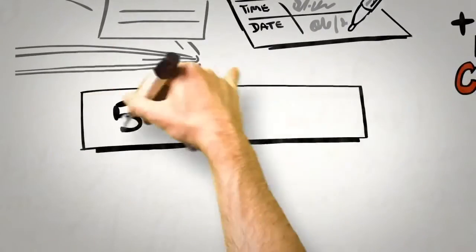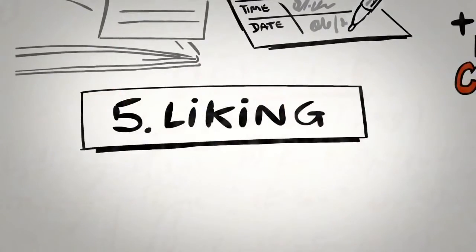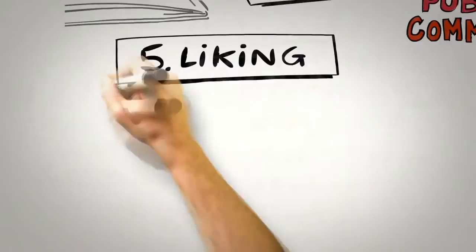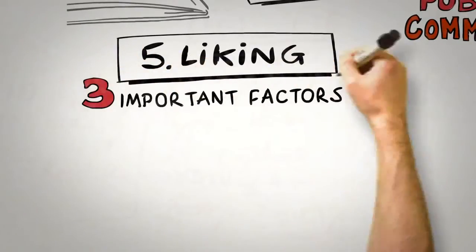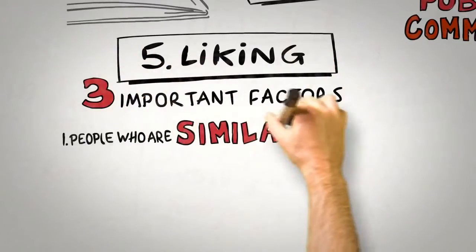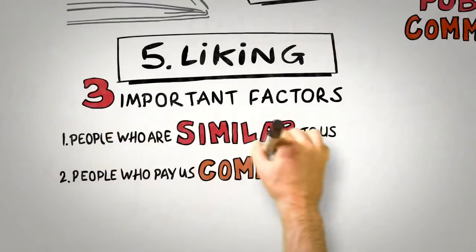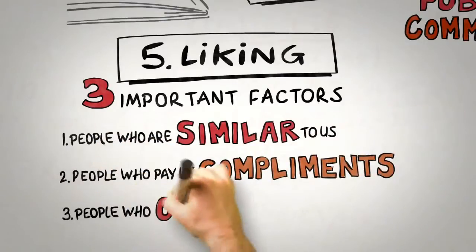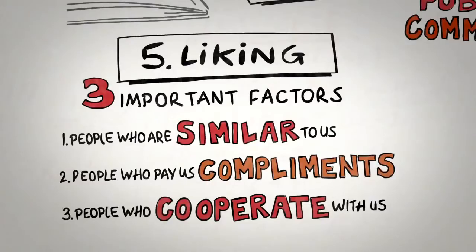The fifth principle is the principle of liking. People prefer to say yes to those that they like. But what causes one person to like another? Persuasion science tells us that there are three important factors. We like people who are similar to us. We like people who pay us compliments. And we like people who cooperate with us towards mutual goals.